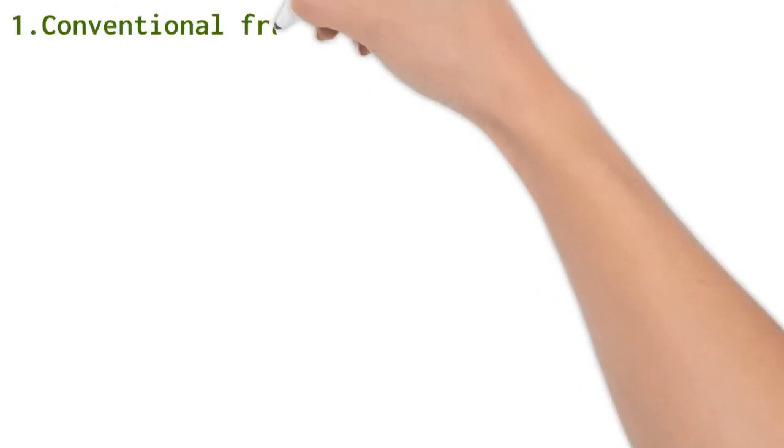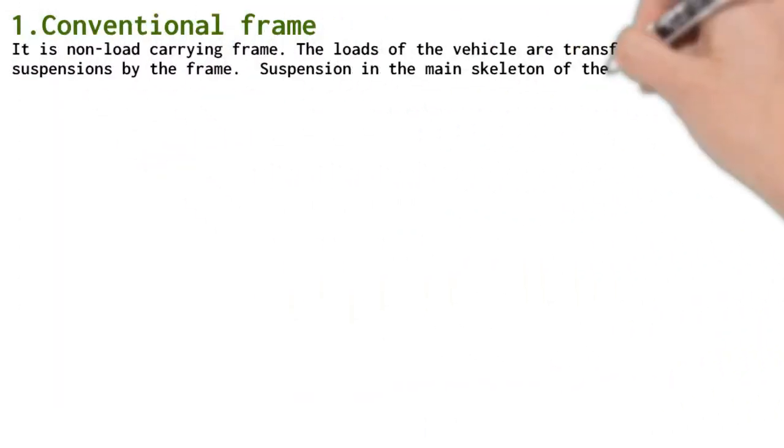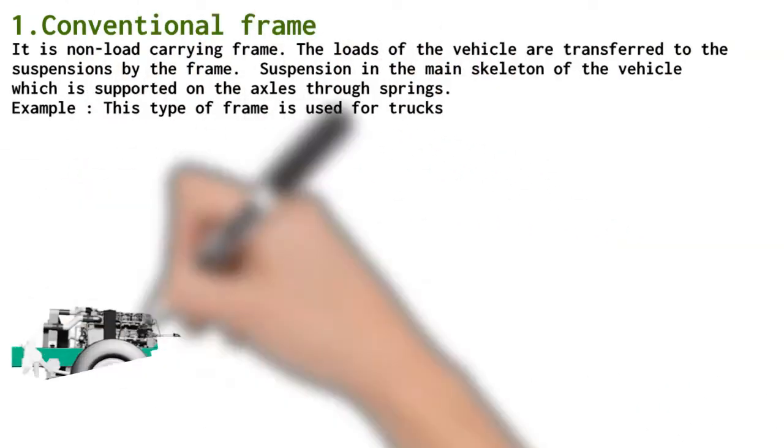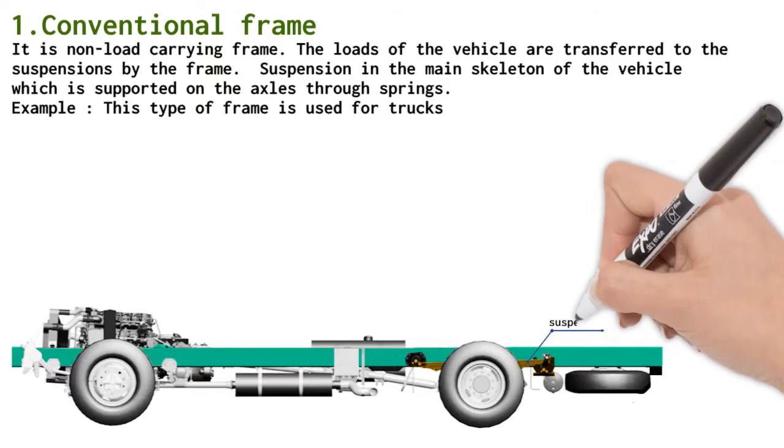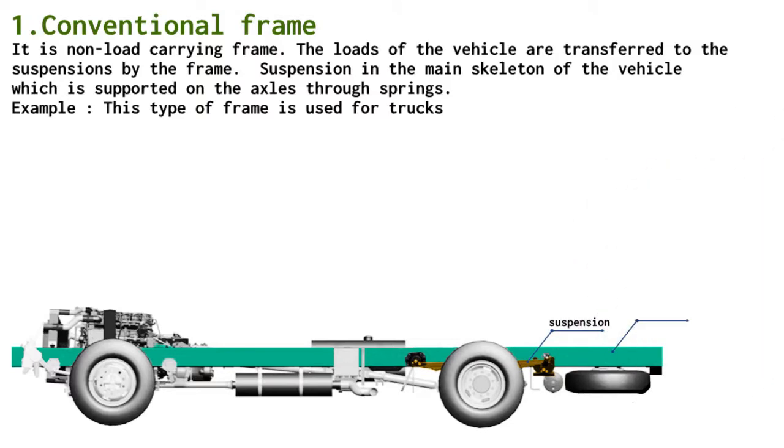Conventional frame. It is non-load carrying frame. The loads of the vehicle are transferred to suspensions by the frame. The suspension in the main skeleton of vehicle is supported on axles through springs.